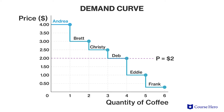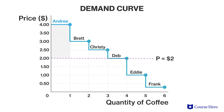The base of Andrea's step is the additional number of cups she adds to the market — one. The height of her step is her willingness to pay, $4, minus the market price, $2. Andrea's consumer surplus is thus the base of her step times the height of her step, which equals $2.